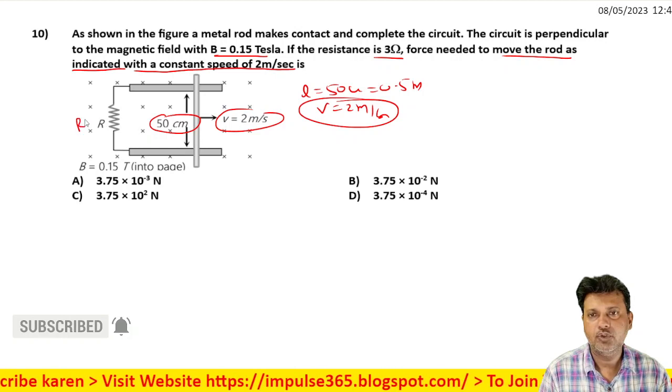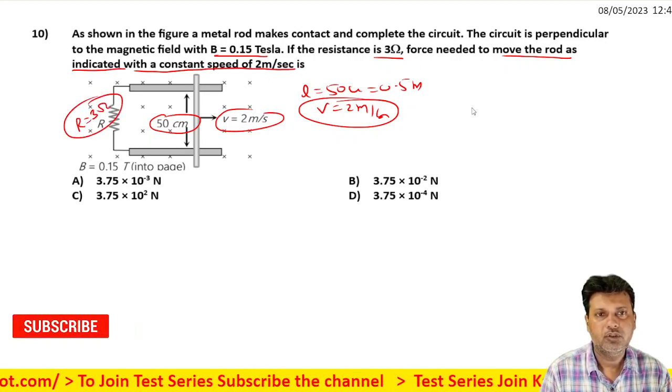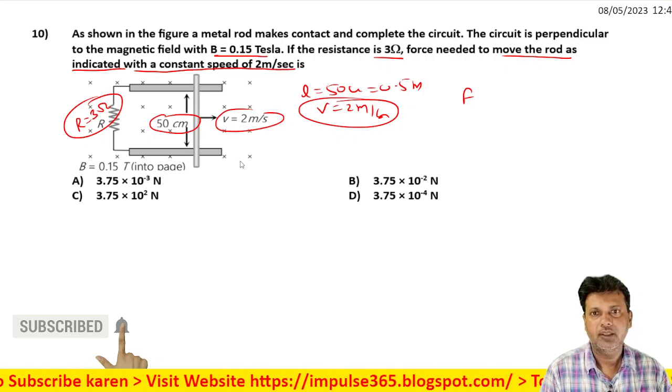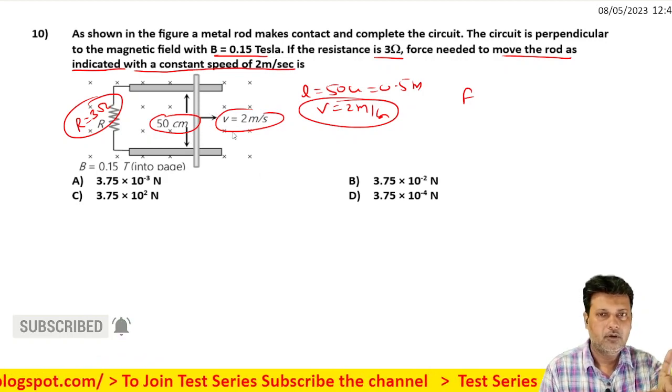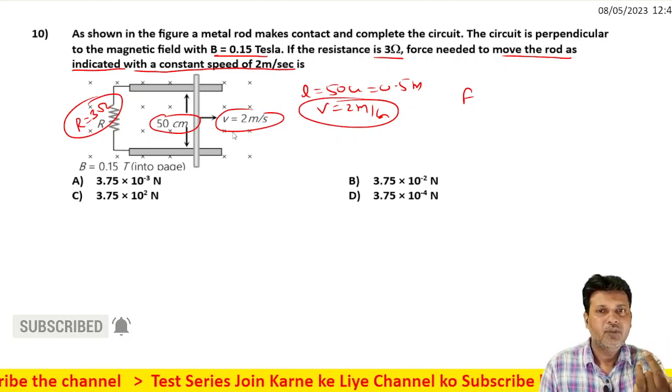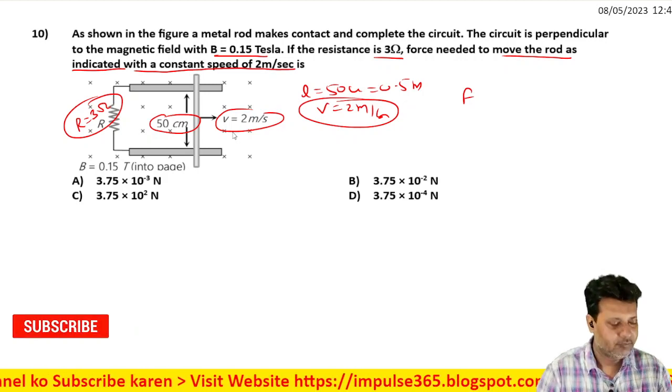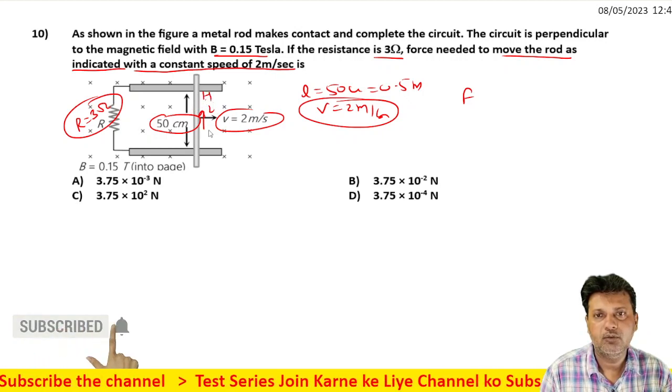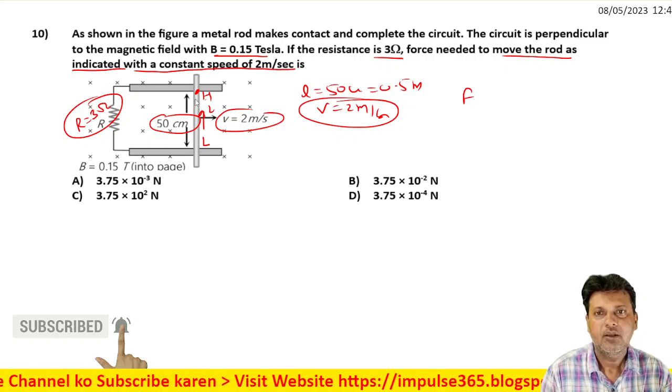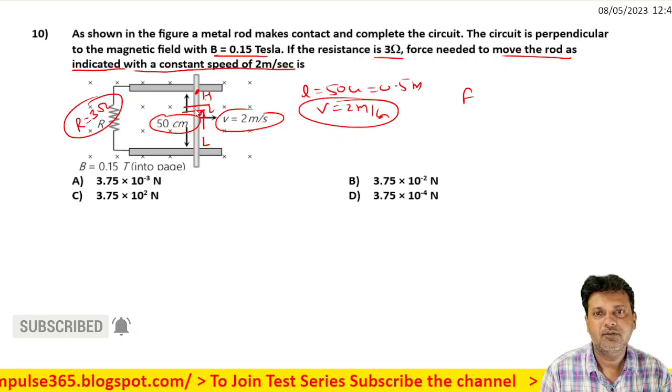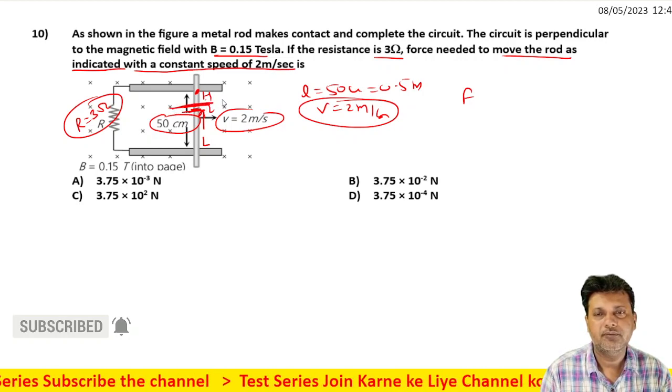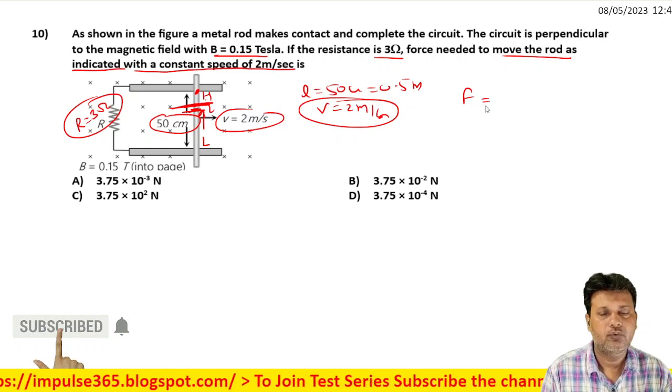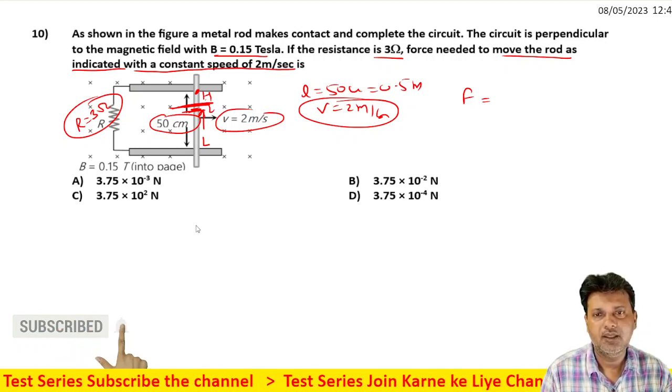The resistance is 3 ohms. Discussing the force and current direction relationships in the circuit with the moving rod.